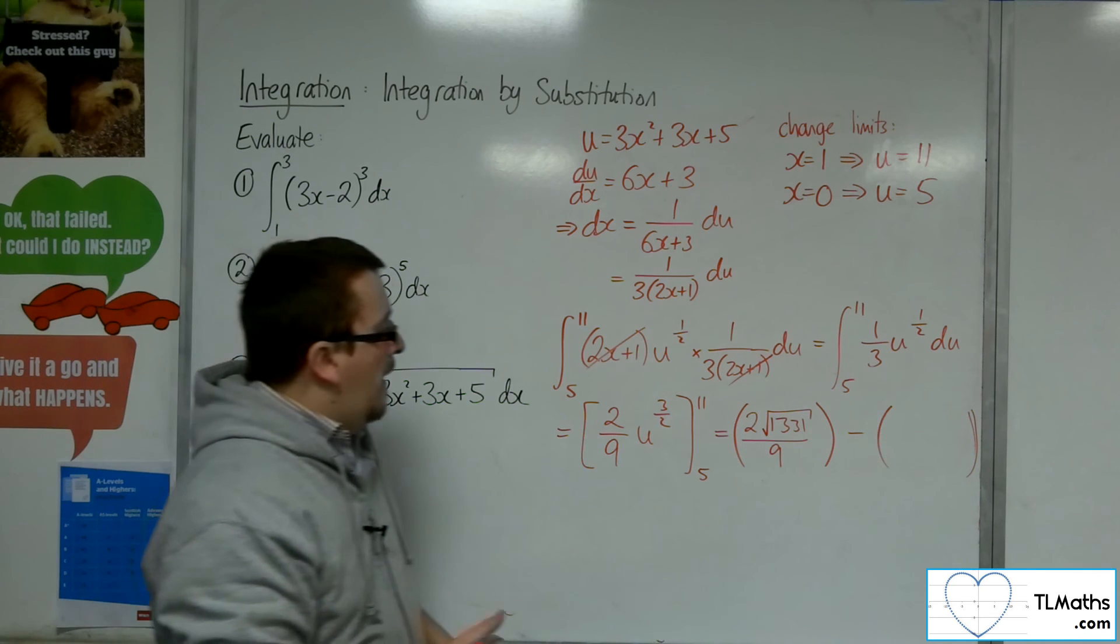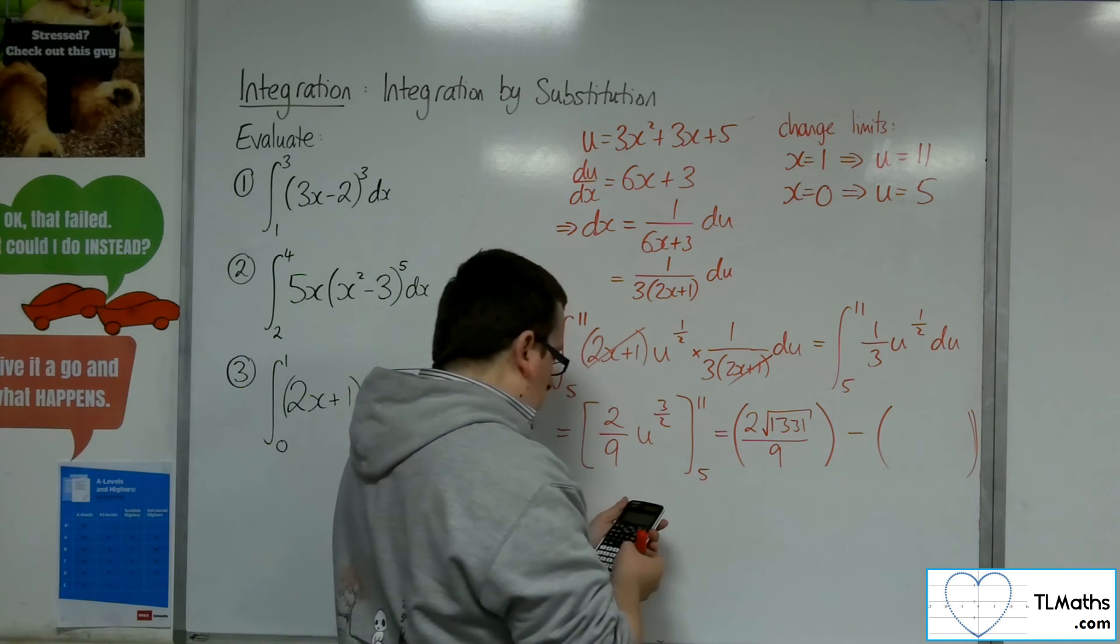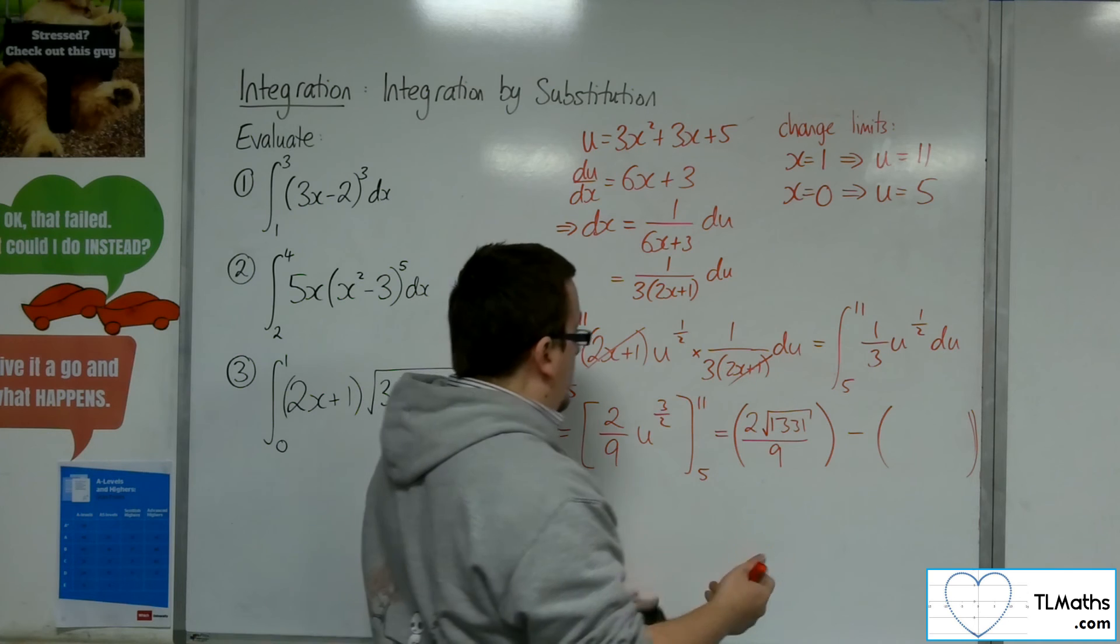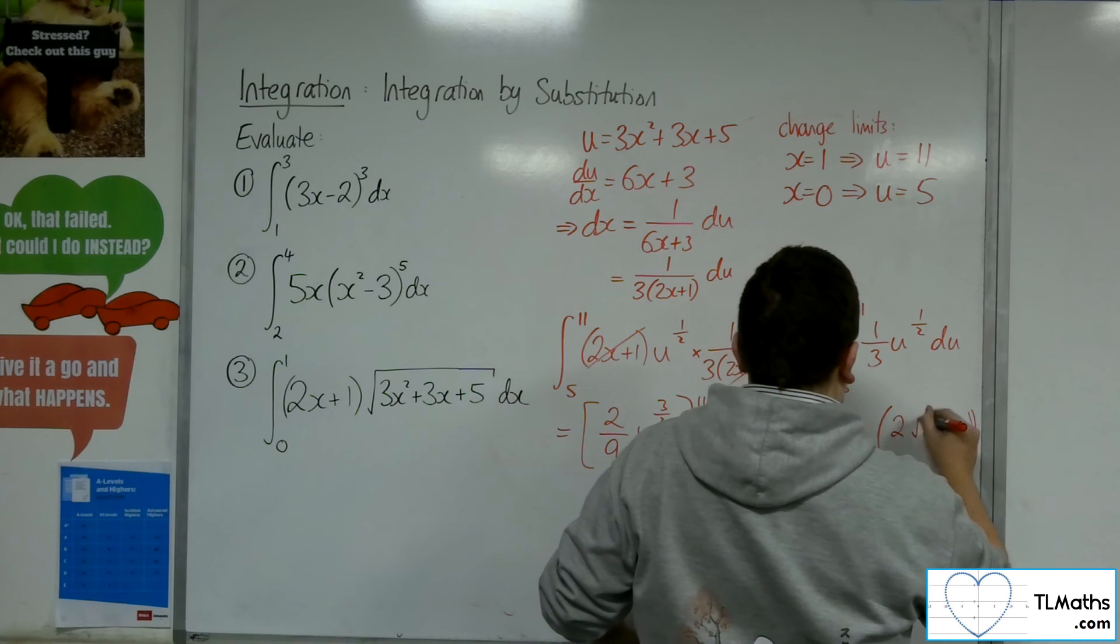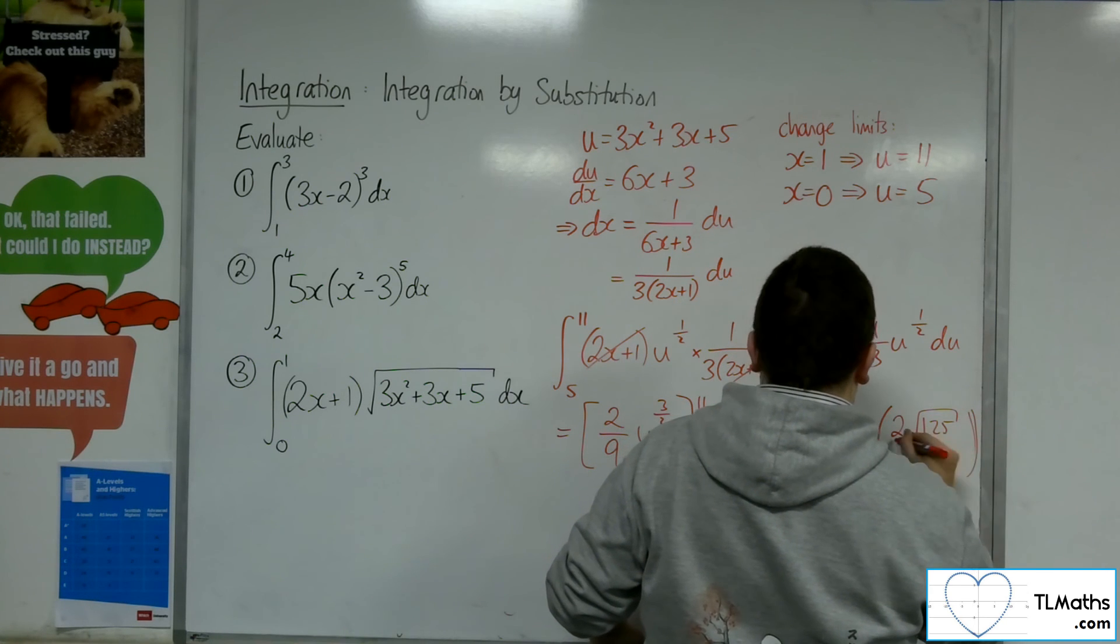So we're going to have 2 ninths square root 1,331. And substituting in the 5, 5 cubed is 125, so 2 ninths root 125.